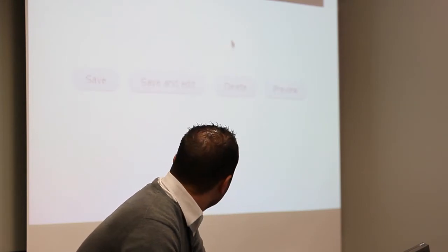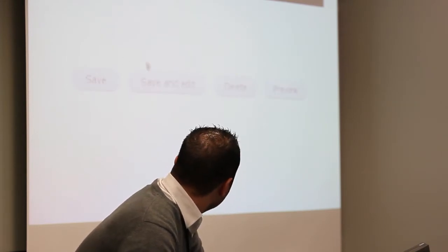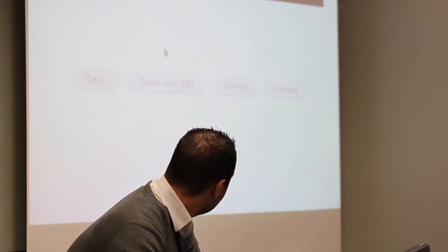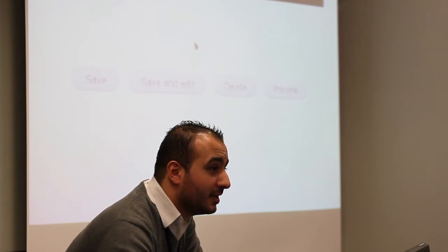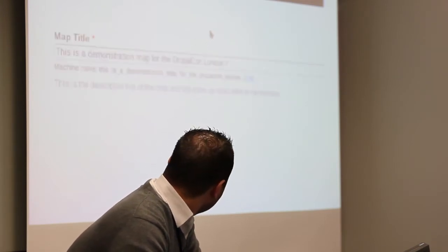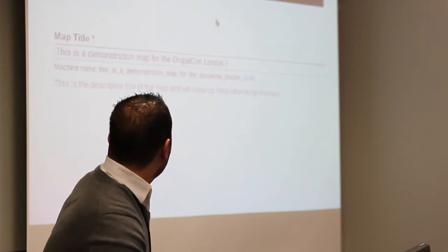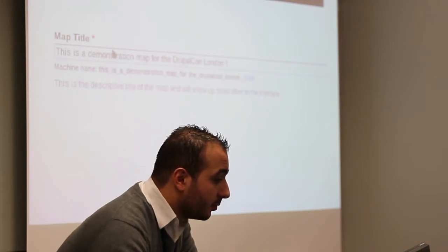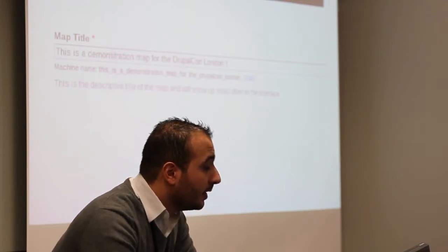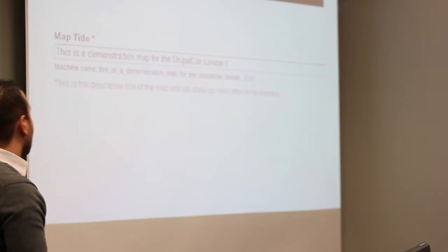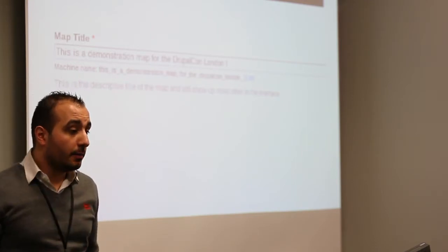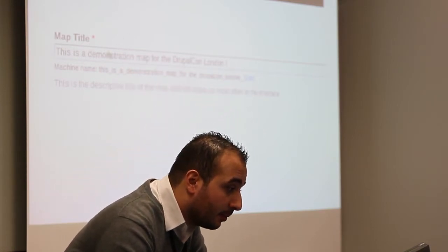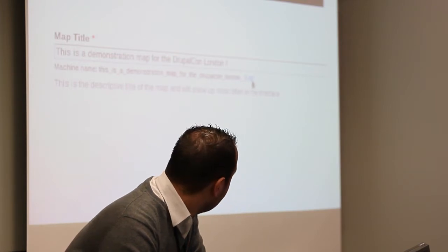The next thing is a small thing but a real time saver: the save-and-edit button on the map edit form. When you edit a map, you have a save-and-edit button. Also, we're now using the new machine name form element provided by Drupal 7. In Drupal 6 and the previous version of OpenLayers in Drupal 7, you had to fill in the machine name manually. Now it's automatically calculated from the map title, and you can also edit it by clicking.